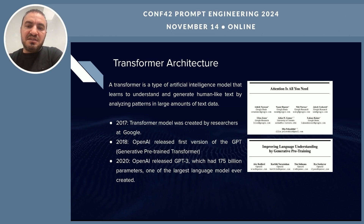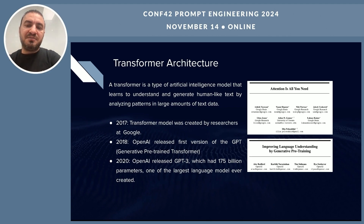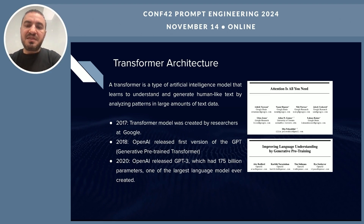The model uses a special technique called self-attention, which allows it to look at all the words in a sentence at once to understand context and the relationships between words to predict the next word. After the transformer model, OpenAI created its first generative pre-trained transformer model in 2018, and in 2020 they created GPT-3, one of the largest language models created, with 175 billion parameters.